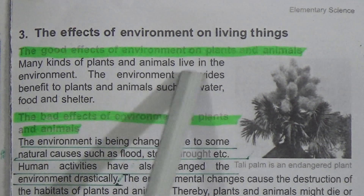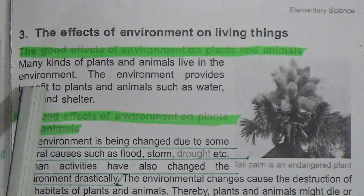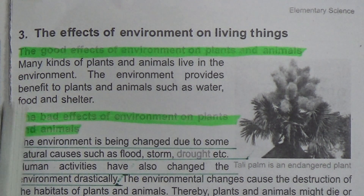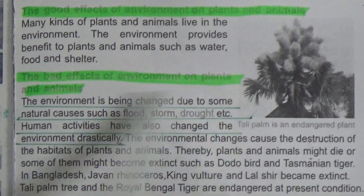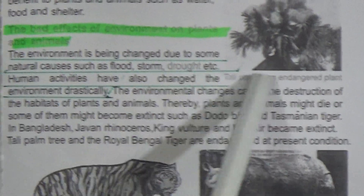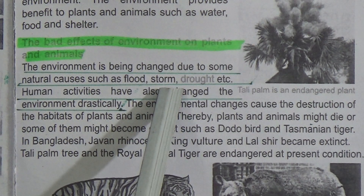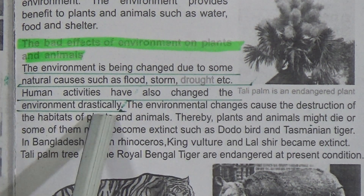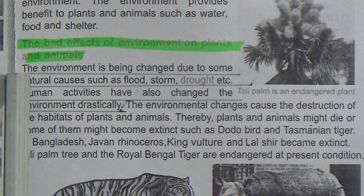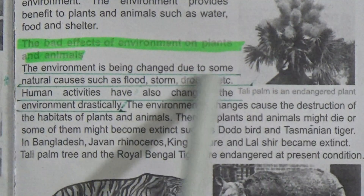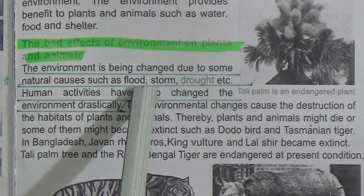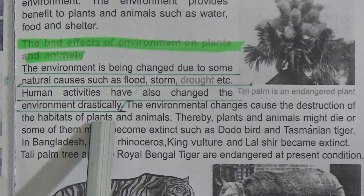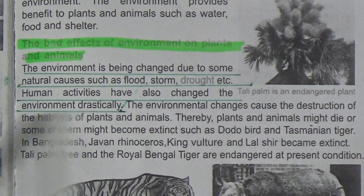The effect of environment on living things: the good effect — the environment provides benefits to plants and animals such as water, food, and shelter. The bad effects — the environment is being changed due to some natural causes such as flood, storm, and drought. Human activities have also changed the environment drastically — underline this line.